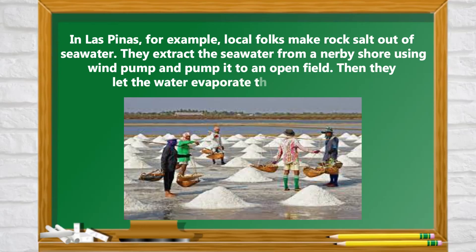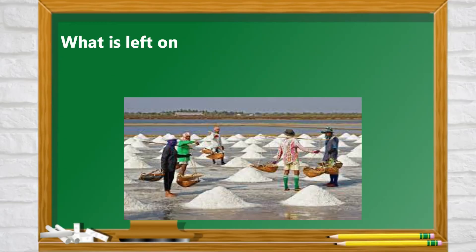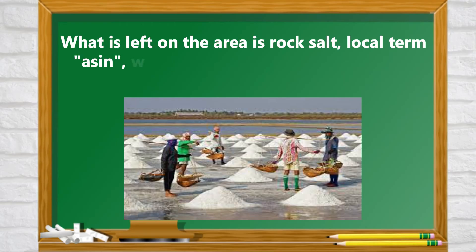They extract the sea water from a nearby shore using wind pump and pump it to an open field. Then, they let the water evaporate through sun baking. What is left on the area is rock salt, local term asin, which they gather forming mounds of salt.